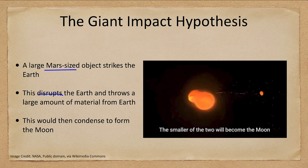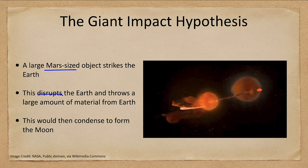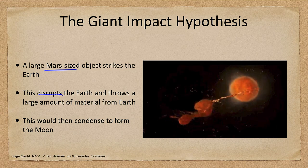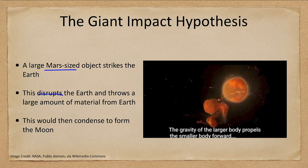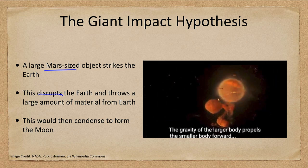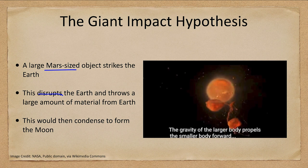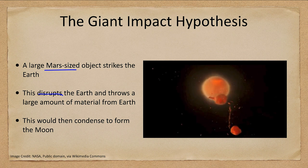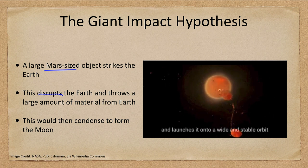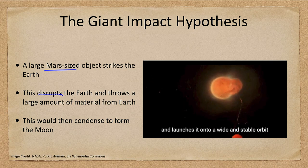This would also explain why there's no icy material on the moon — any icy material would have been vaporized in this impact. This is one way to explain that aspect of the moon's composition.